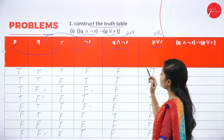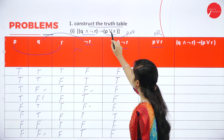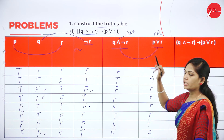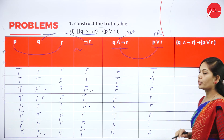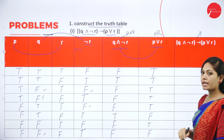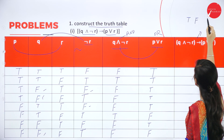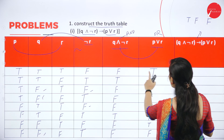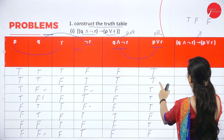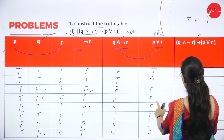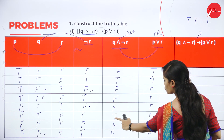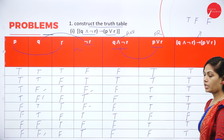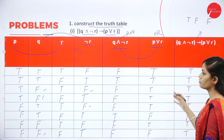Finally, find Q ∧ ¬R → P ∨ R using these two columns. In implication, if the first condition is true and the second is false, only then it is false; otherwise all conditions are true. So here: false → true = true, true → true = true, false → true = true, but true → false = false. This is the truth table for the given problem — a very simple concept. Please practice these problems.